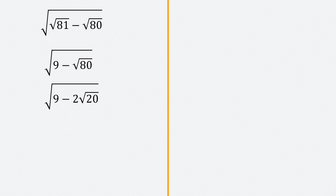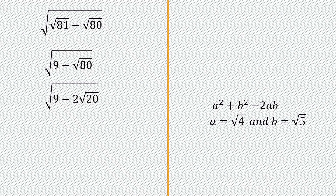Now I'm going to use this expression: a squared plus b squared minus 2ab. I'm going to write whatever is under the square root sign in the same form as this expression. To do that, we make a equals root 4 and b equals root 5. If a equals root 4, then a squared is 4. If b equals root 5, then b squared is 5. So a squared plus b squared is 4 plus 5, which gives us 9 — and that matches what's on the left-hand side. In the same way, 2ab is going to be 2 root 4 root 5, which is 2 root 20. That also matches what's on the left-hand side.